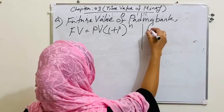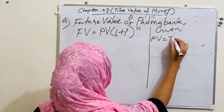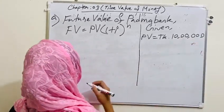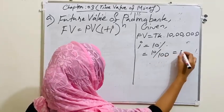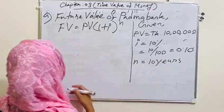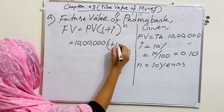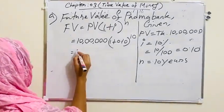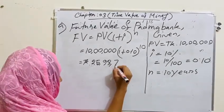First, the given: PV equals 10 lakh, I equals to 10 divided by 100 which is 0.10, and N equals to 10 years. So, 10 lakh into 1 plus 0.10 to the power 10. By calculating this, we will get 25 lakhs 93,742.